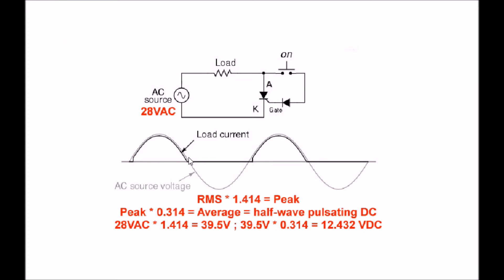Why did I read around 12.5 volts DC? This is why. RMS times 1.414 equals peak. Peak times 0.314 equals average, which equals the half-wave pulsating DC that I got. 28 volts AC times 1.414 is about 39.5 volts. That gives me the peak. 39.5 volts times 0.314 equals around 12.5 volts DC. That's why you saw the voltage we were measuring. And that tells me that the circuit was working.